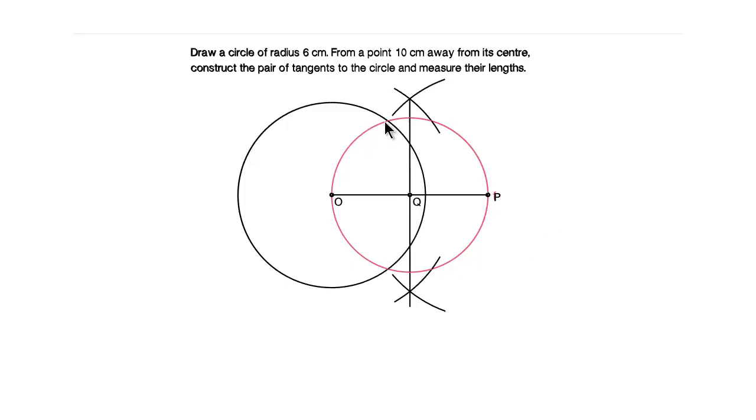Let us mark this intersection point of the circle given and the imaginary circle as A and this point as B. Now the next step is to join the points AP and BP.